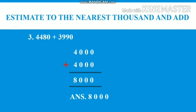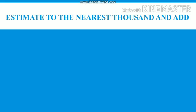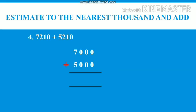Now we will do the last question: 7210 plus 5210. Now again we will estimate the numbers which is given. So 7210 will be 7000 and 5210 will be 5000. Now we will add 7000 plus 5000 and we will get 12000. So our answer will be 12000.